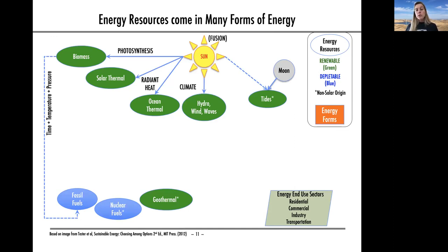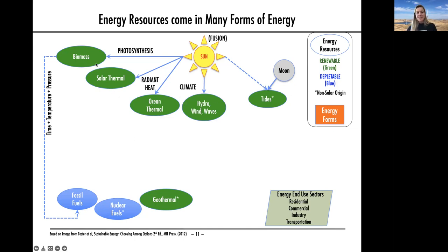Let's look at what energy resources exist on Earth and what form they exist in — that matters in terms of how useful they are and how many conversions we have to make. The green bubbles here are renewable resources: biomass, solar, ocean, wind, geothermal. The blue bubbles are depletable resources: fossil fuels and nuclear fuels. The sun is a fusion reactor driving a lot of our renewable resources, and our fossil fuels are just old biomass — biomass that's been crushed over millions of years in the pressure cooker of our crust, also originally powered by the sun.